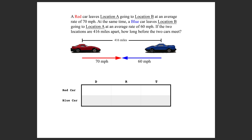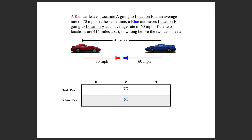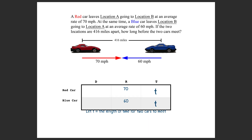Next, let's fill in what we know. We know the speeds or the rates for both cars. Now we must declare or assign a variable we're trying to find — most math teachers want you to do so. In this case, let t be the length of time for the two cars to meet, and fill in the variable t. T is exactly what we're looking for. Both cars take the same amount of time before they meet.